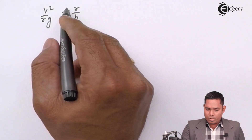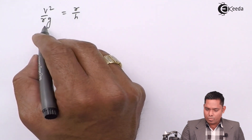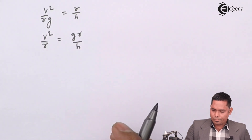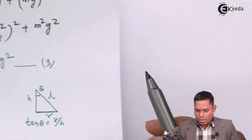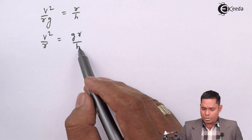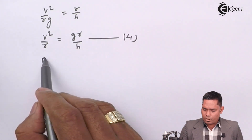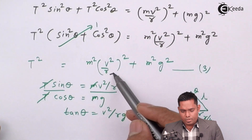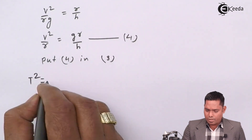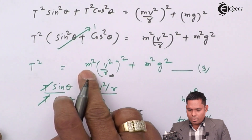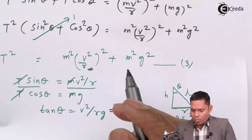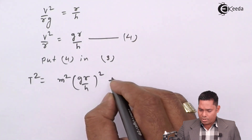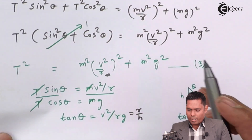So in place of v²/r, I will write gr/h — this is equation number 4. Putting equation 4 into equation 3: on the left side I have T², and on the right side I have m²(gr/h)² plus m²g², which opens up to m²g²(r/h)² plus m²g².